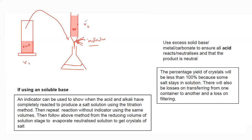Repeat the same procedure without the indicator to obtain a pure salt from the solution. We don't obtain the salt directly from the indicator mixture because the indicators are colored — the crystals would be colored too. By repeating without indicator and using the same volumes, we get a pure salt solution.